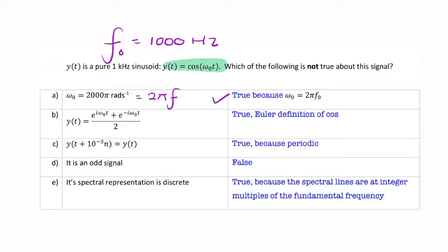The second statement looks a bit out of place, but in fact, that is the definition of cosine. It's the Euler definition of cosine.